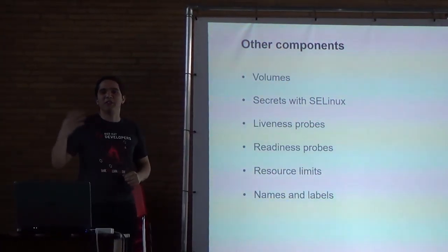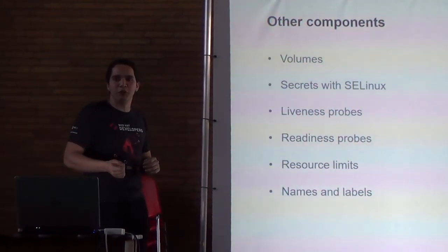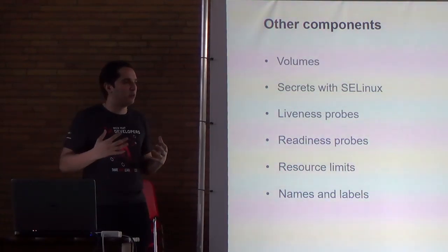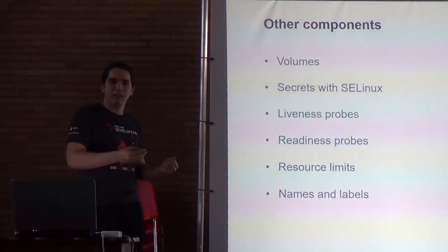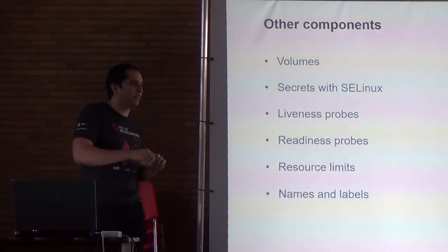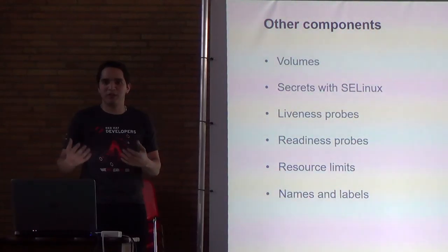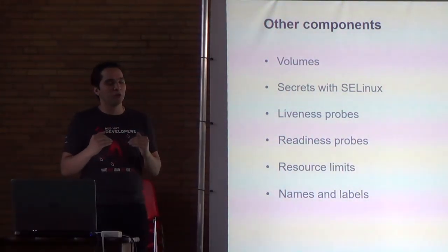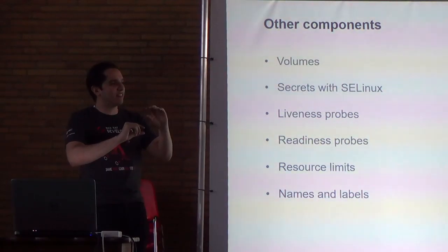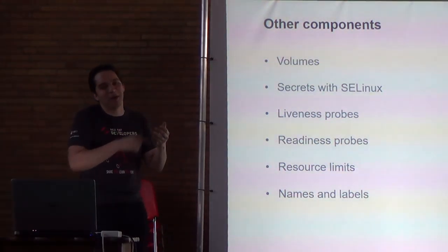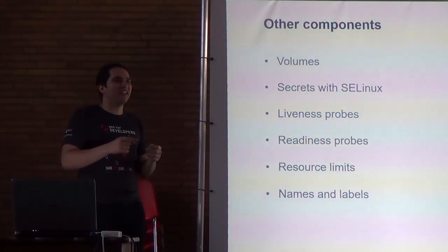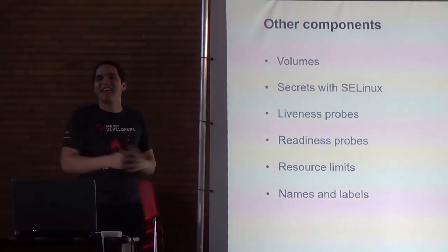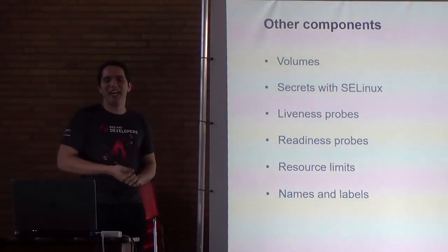For volumes, when we started, we did not have all the different volume types that Kubernetes offers now. We had logging that we wanted to accumulate into a certain space, but the version we started with didn't have NFS mounting. So we had to mount a volume of the host machine, and underneath that host machine the directory would be mounted through NFS. Basically, we took a very big loophole to get to NFS — but it works. We had to do with what we had.